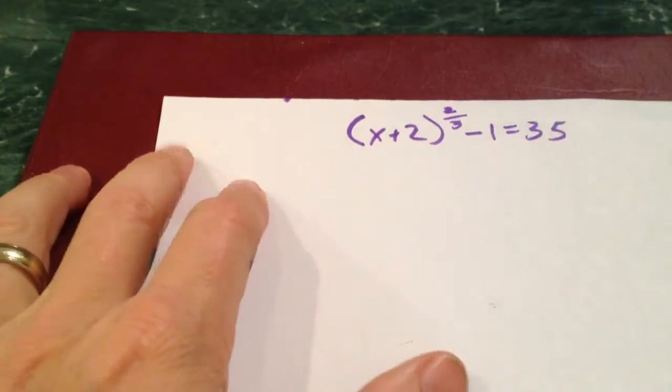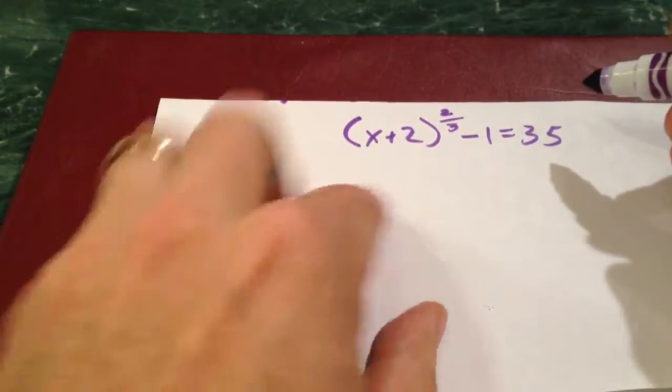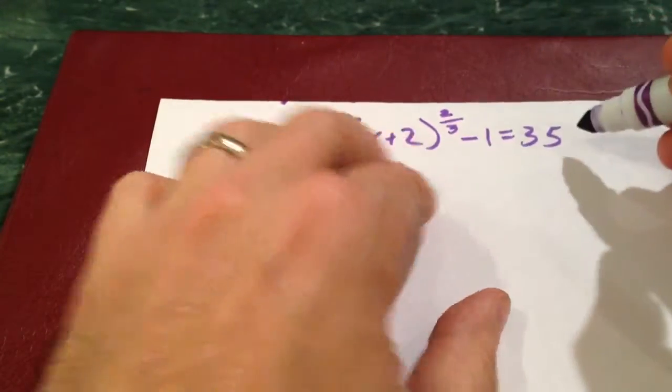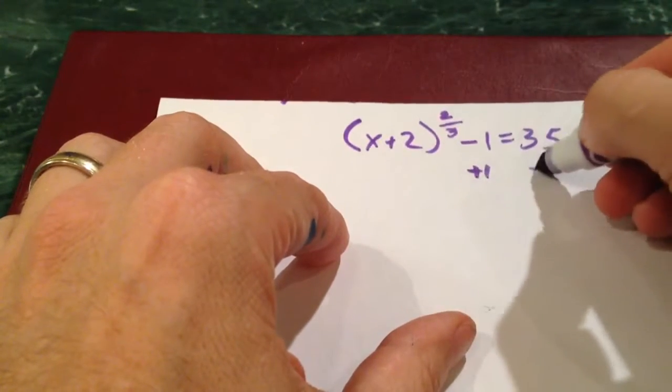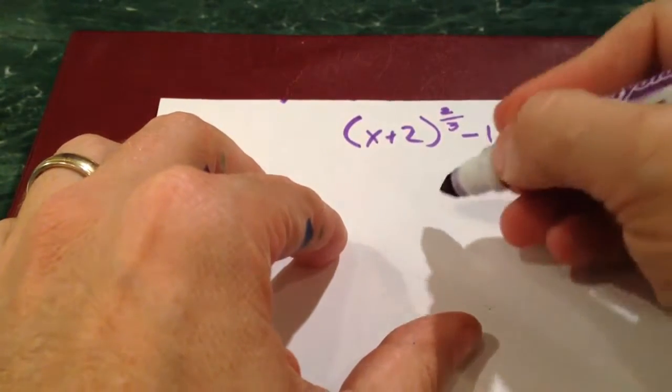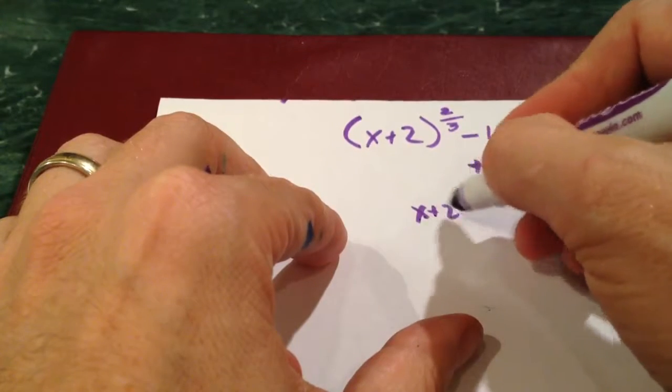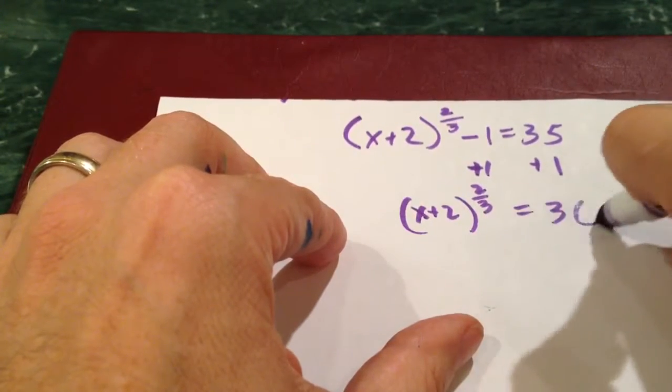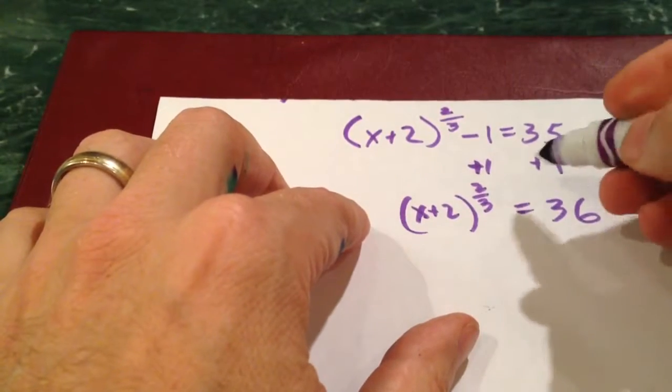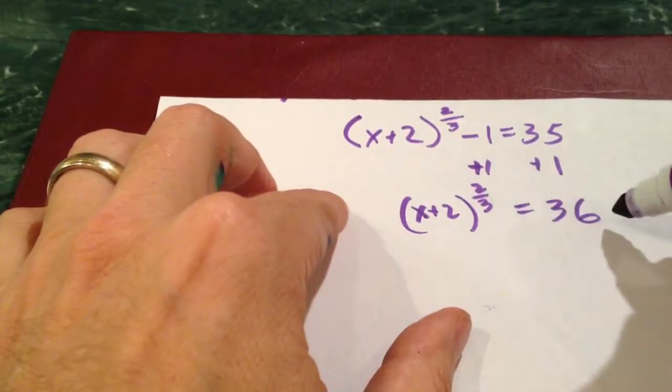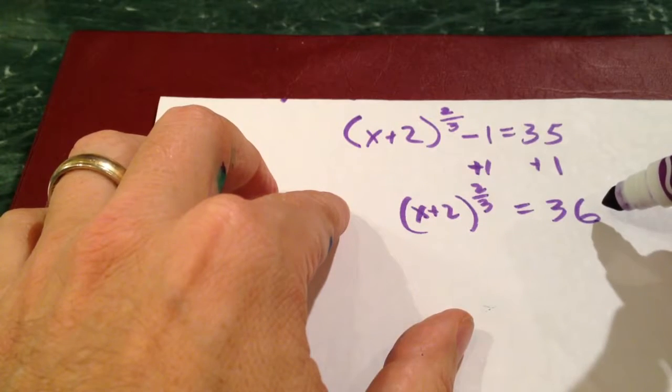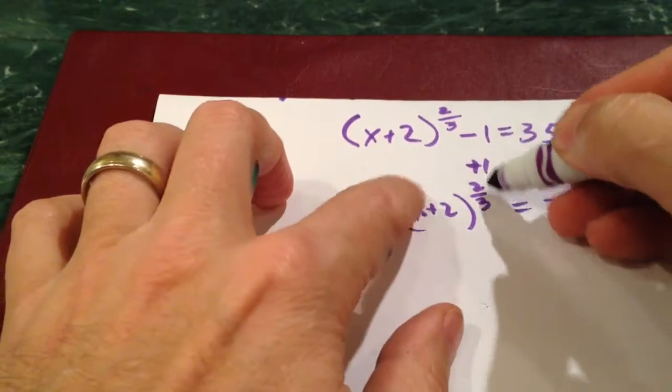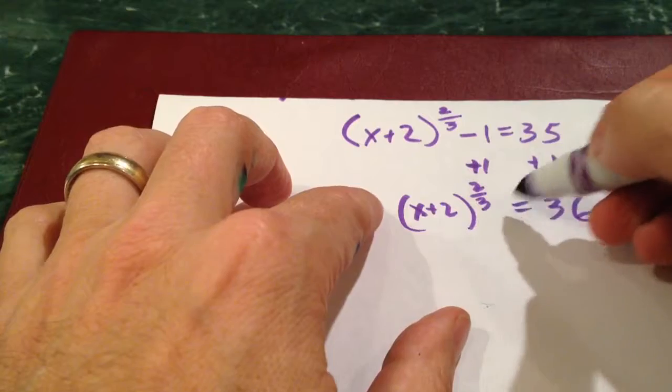So I'm going to do this one. The only thing keeping me from having something to the 2 thirds power equals something is this minus 1. So I'm going to add 1 to both sides. That's going to be x plus 2 raised to the 2 thirds equals 36. Now I can do my trick. If you wanted to, you could take the third root first, or raise it to the third power first, and then square root it.